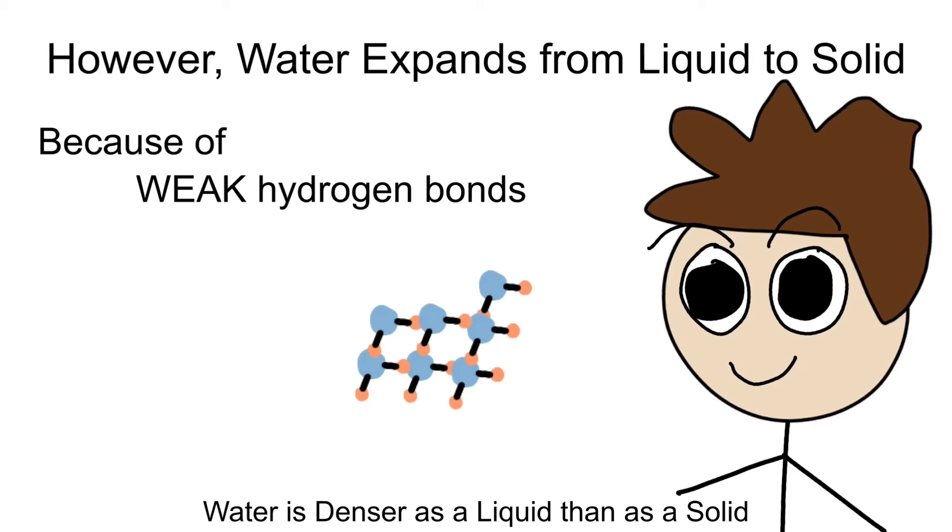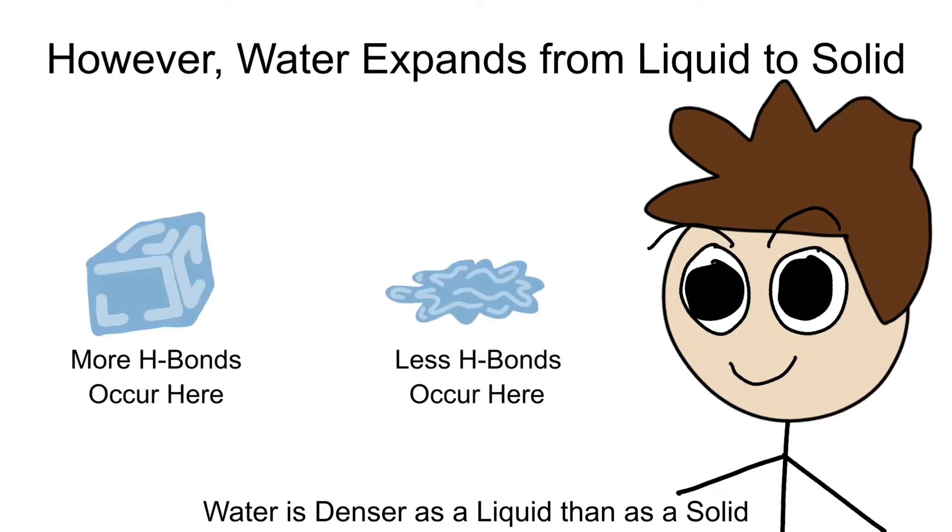So overall, as a liquid, hydrogen bonds are less frequent than if it were a solid ice state. And since in liquid state, water is bouncing and rubbing off of each other, you begin to realize that water in the liquid form is actually more condensed, dense, than when you compare it to the ice state.